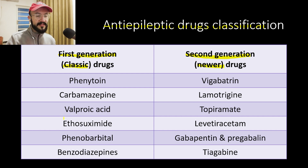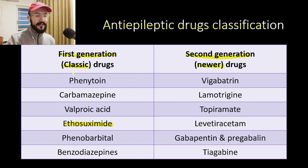Ethosuximide is included in the first generation. Other examples of the first-generation anti-epileptics include phenytoin, carbamazepine, valproic acid, phenobarbital, and the benzodiazepines.